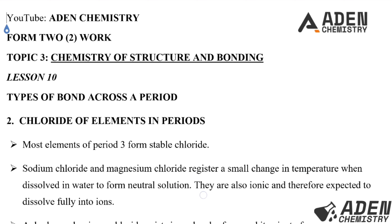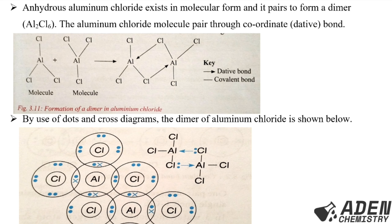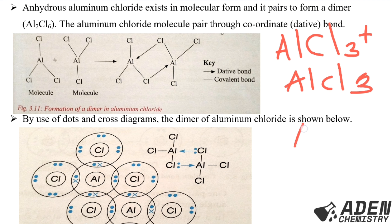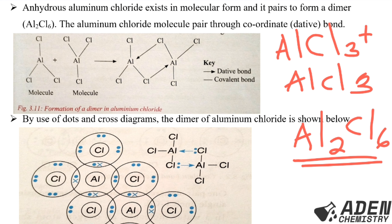Sodium chloride and magnesium chloride are ionic and therefore expected to dissolve fully into ions. Next, we go to aluminium chloride. Anhydrous aluminium chloride exists in a molecular form and pairs to form a dimer. Dimer aluminium chloride is written as Al₂Cl₆. The aluminium chloride molecules pair through a coordinate or dative bond. We write aluminium chloride as AlCl₃, and when we add another AlCl₃, we get Al₂Cl₆ — that is the formula of dimer aluminium chloride.